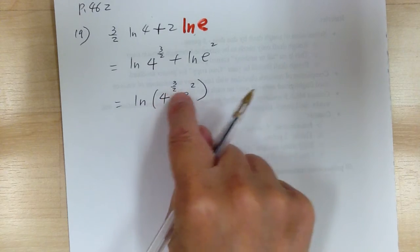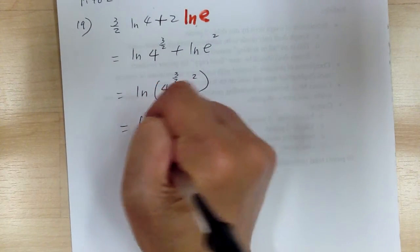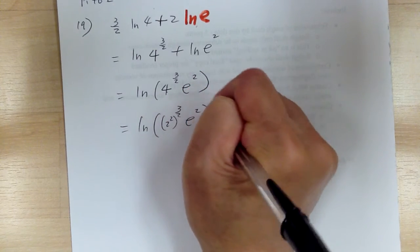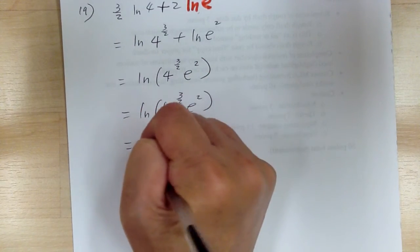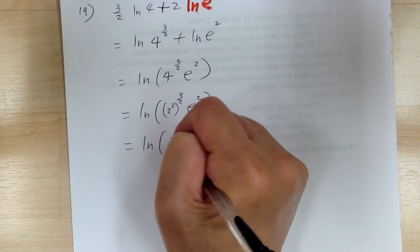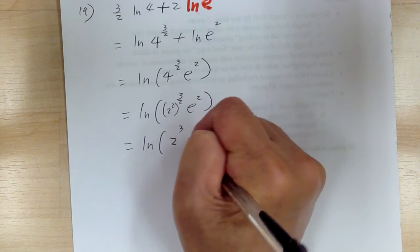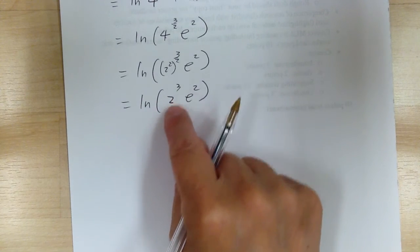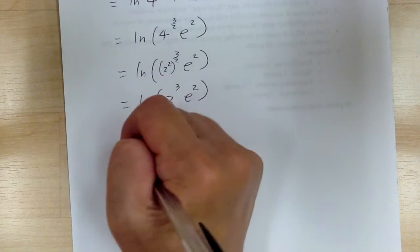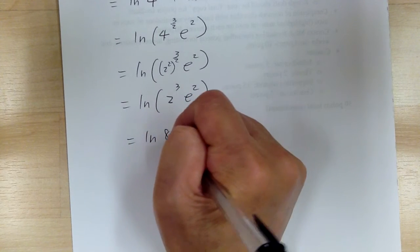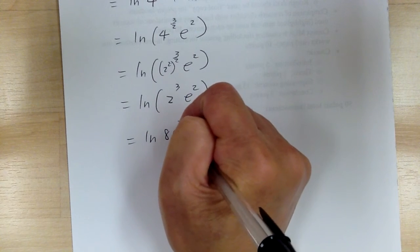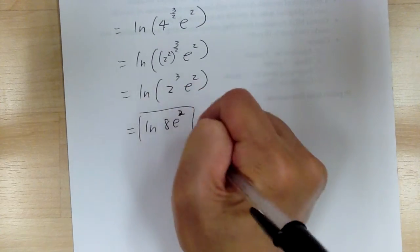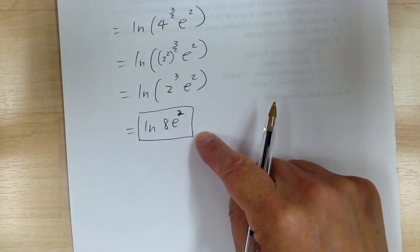Now simplify: 4 is 2 squared, so this becomes 2 to the 3 power times e to the 2. Normally if you have a simple number you don't want to leave it unexpanded, so multiply it out. So this equals natural log of 8e squared. Make sure you show your steps going down step by step.